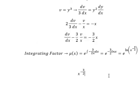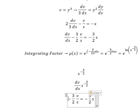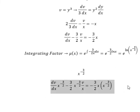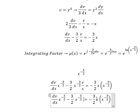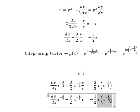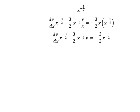We have x to the power of negative 3 over 2, and we multiply both sides by this integrating factor. We can simplify: that gives us x to the power of negative 1, and then we have negative 5 over 2. This gives x to the power of negative 1 over 2. We then put the integration on both sides.